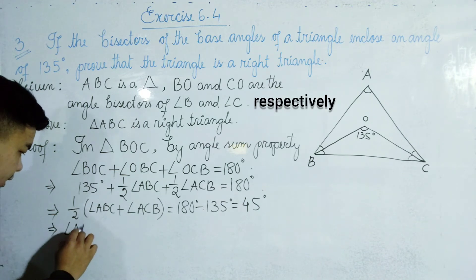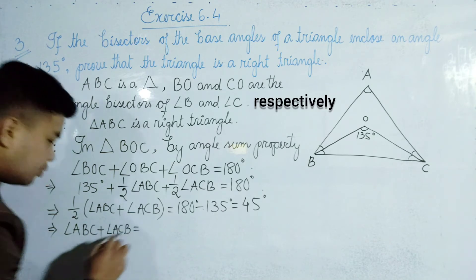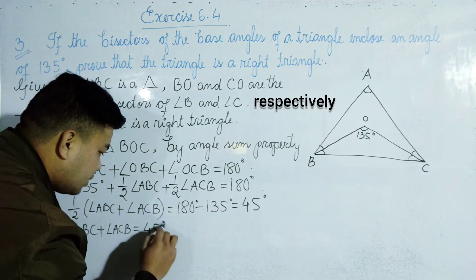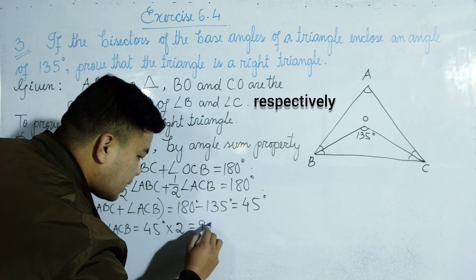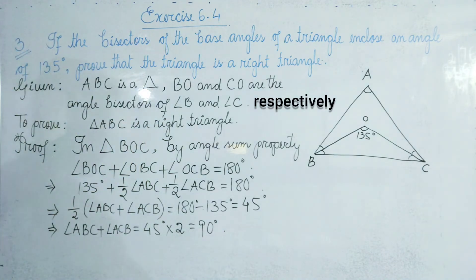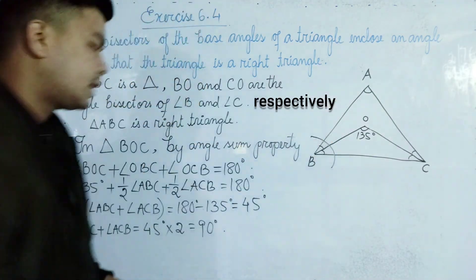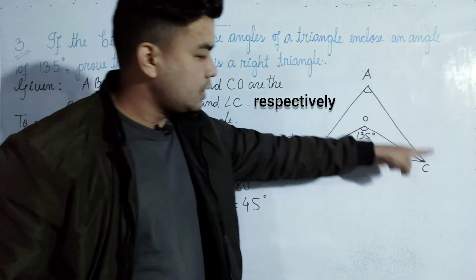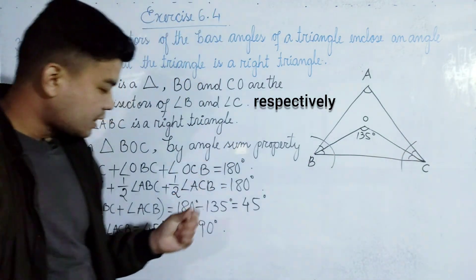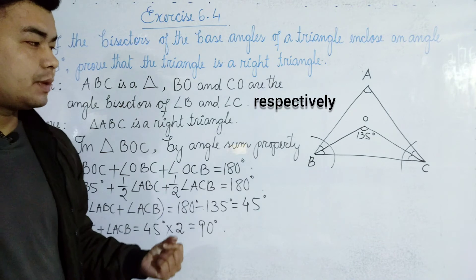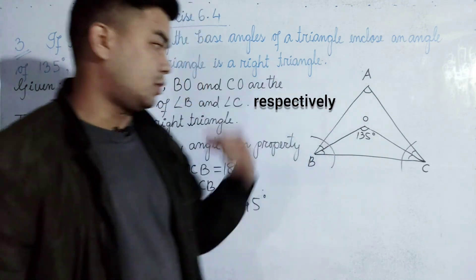Angle ABC plus angle ACB is equal to 45 degrees. Divided by 2, multiplied by 2, is equal to 90 degrees. We will see angle ACB is approximately equal to angle ACB.